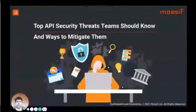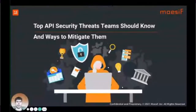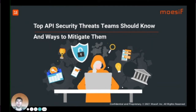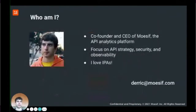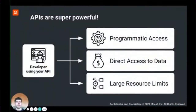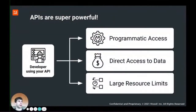Hi, today we're going to be talking about different security threats and some ways for you to mitigate these upcoming threats with APIs. A little bit about myself: I'm the CEO of Mosef, the API analytics platform, and I love focusing on API strategy, security, and observability. I also love IPAs — you can find me at bars here in San Francisco like Zeitgeist. APIs are super powerful; they provide direct access to your data and usually expose very large resource limits. With great power comes great responsibility, so today I'm going to walk through the top 10 things we see coming that you should be thinking about.